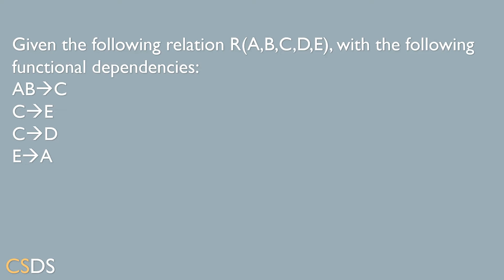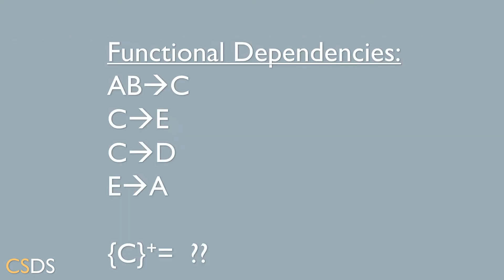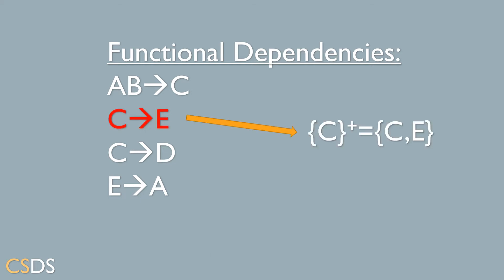We are given the following relation with the following functional dependencies. For our first example, we're looking for the closure of C. In order to do so, we're looking for all the attributes that can be derived from the attribute C. First of all, we add the attribute C to the closure of C, because obviously we can determine C from the attribute C.